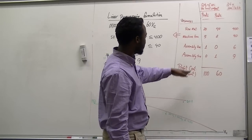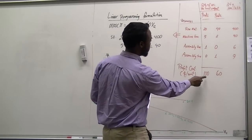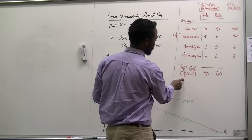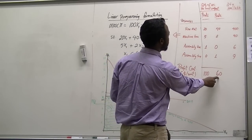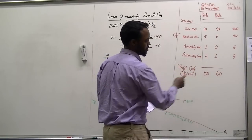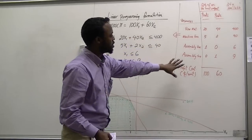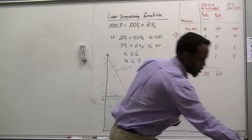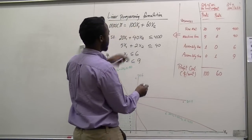This is the word formulation of the problem. Each unit of Product 1 contributes $100 per unit to the profit, and the contribution of Product 2 is $60 per unit. Once we know this information, we can transform it into a linear programming formulation.